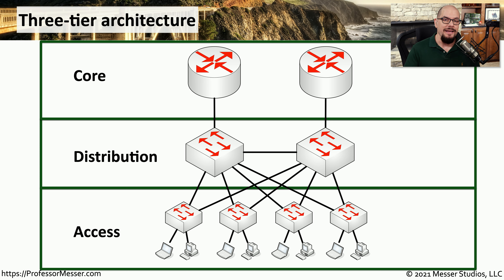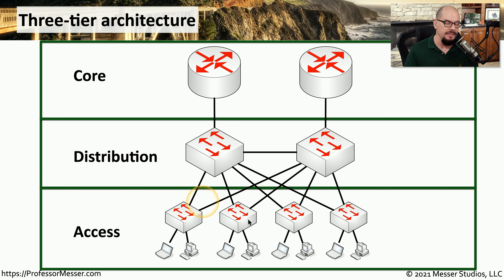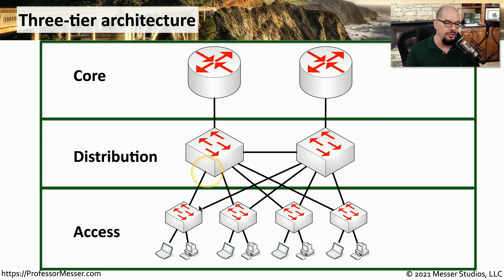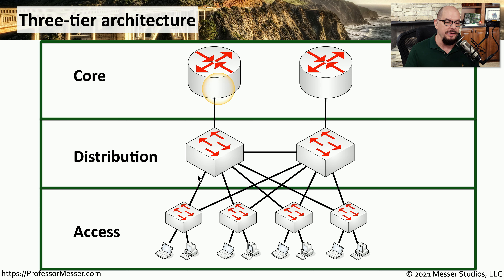If we were to show this as a network diagram, this is the topology you would have. All of your users are at the bottom, connected to access switches. The access switches are then connected to distribution switches, and you can see there are multiple distribution switches. The access switches might connect to multiple switches to provide redundancy. The distribution switches are then finally connected to the core, providing that final tier between the users and the services in the core.